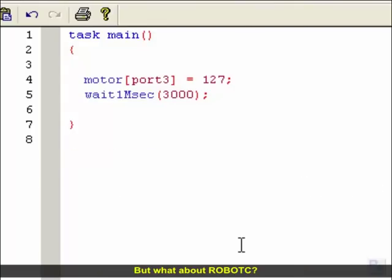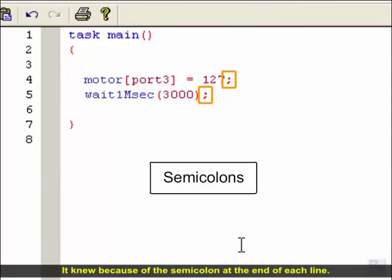But what about Robot C? How did it know where one statement ended and the other began? It knew because of the semicolon at the end of each line. Every statement ends with a semicolon. It's like the period at the end of a sentence. End of statement one, end of statement two.